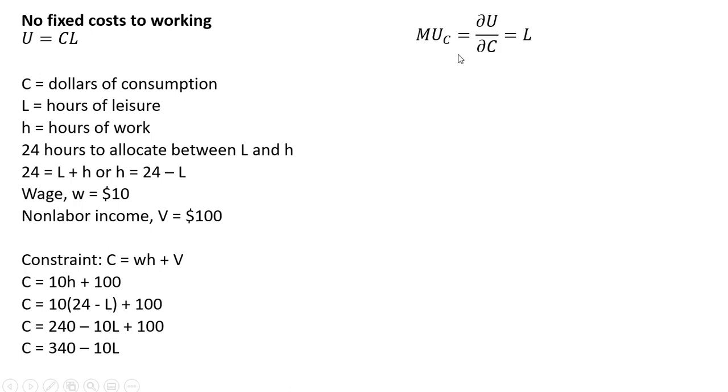Next, we're going to get the marginal utility of consumption, which is just L. Partial derivative of the utility function with respect to consumption gives us L, and the marginal utility of leisure gives us back C. Forming the utility maximizing condition, where the marginal rate of substitution equals wage.